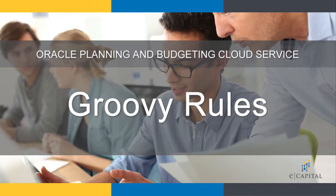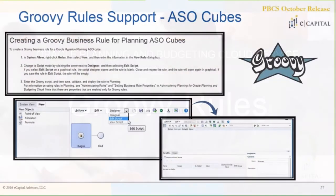Enabling Ruby scripting within ASO plan types. Ruby scripting is another way that we can write business rules within the application. There have been numerous releases enhancing Ruby scripting within the planning plan types — those plan types leveraging web forms and those that leverage our forecasting and budgeting processes. We've seen several enhancements around there.